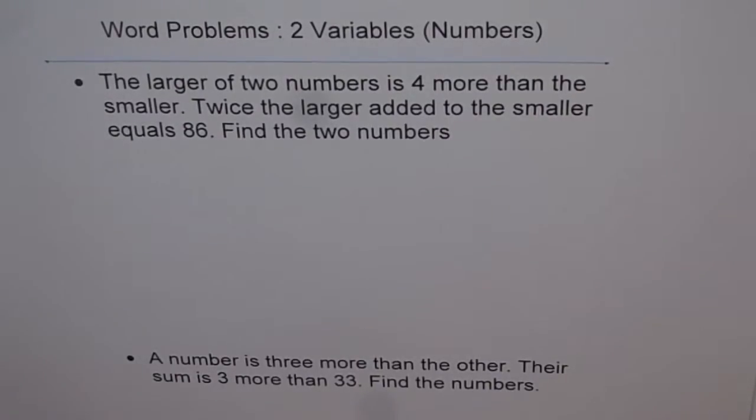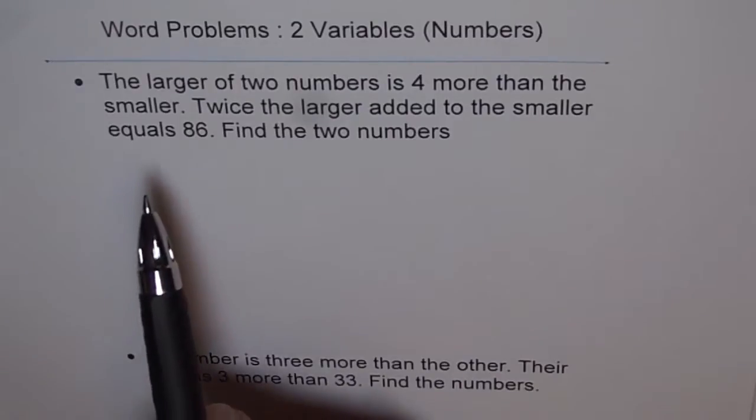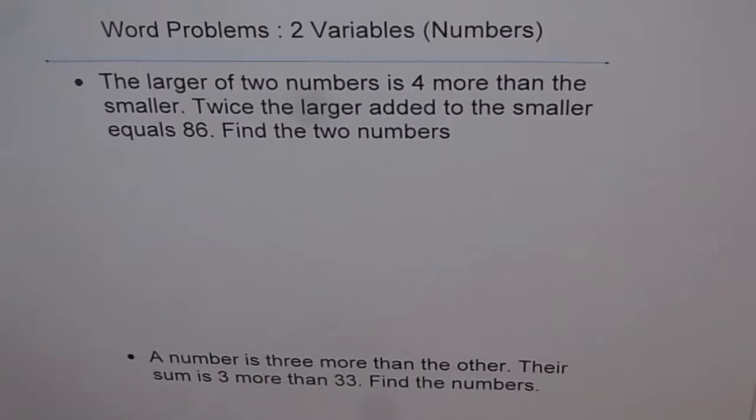Here is a word problem in two variables regarding numbers. Question is, the larger of two numbers is four more than the smaller. Twice the larger added to the smaller equals 86. Find the two numbers.